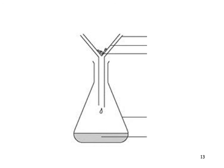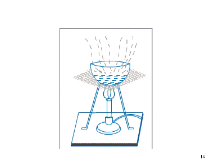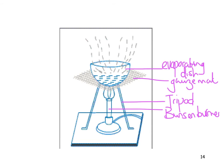You pour the mixture into a filter funnel with filter paper in it. What stays behind is called the residue. What comes through into the conical flask is called the filtrate. The filtrate then goes into an evaporating dish on a gauze mat over a tripod and Bunsen burner. All of the liquid burns off and you're left behind with — in our sand and sugar example — the sugar. The sand would have been the residue and the sugar is left behind.